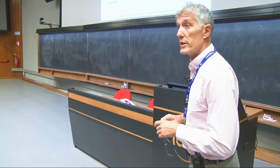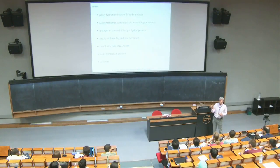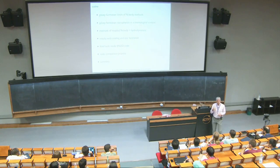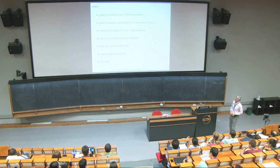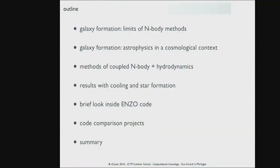Things are actually getting quite reasonable in terms of their fidelity for low order properties, and making disk galaxies that look like the Milky Way — which was a challenge as recently as four or five years ago — is now achieved with a fairly high degree of fidelity, as I'll show in some movies from simulations by Phil Hopkins and his group. Then I'll go through some methods, talk about results with cooling and star formation, take a brief look inside the ENZO code, and finish by looking at recent papers that compare multiple codes with the same physics and initial conditions.